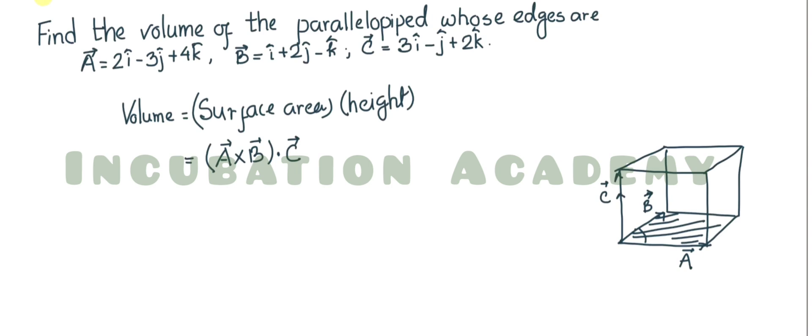For other geometrical bodies — for example, a right circular cylinder — the base area is π r² and h is the height, and multiplying them gives the volume. Similarly, for any shape we multiply base area by height. Here we have to calculate a cross b dot c, which is mathematically called the box product or scalar triple product.